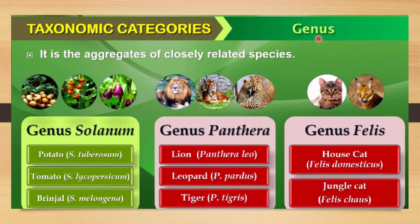Genus includes many closely related species. Another genus example is Felis. Both the house cat and the jungle cat belong to Felis. Felis is the genus name in both cases — Felis domesticus for the house cat and Felis chaus for the jungle cat, where domesticus and chaus are the respective species names.